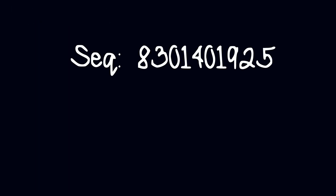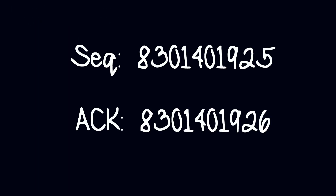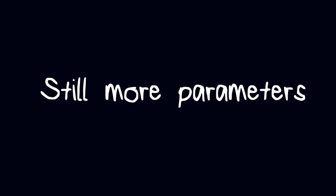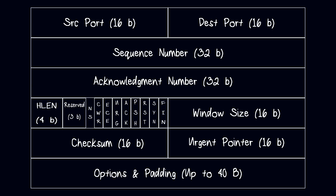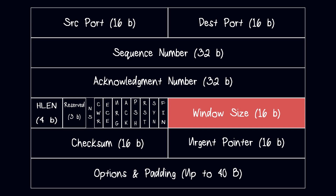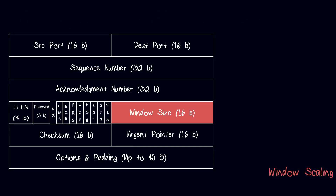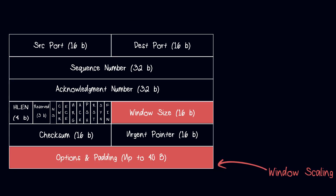Other than sequence numbers and acknowledgment numbers, the handshake also provides additional parameters in the SYN and SYN-ACK packets. Here's our beautiful TCP header again. One of the parameters exchanged in the SYN and SYN-ACK packets includes the window size and window scaling, which is located inside the options field. Those will be covered in the TCP flow control video.